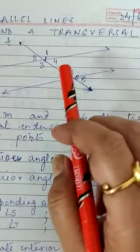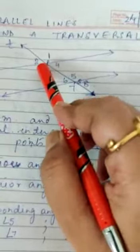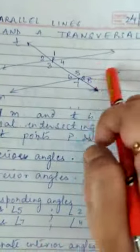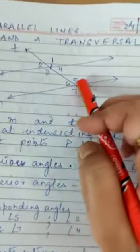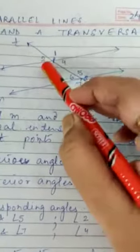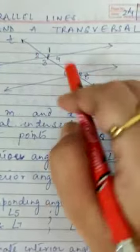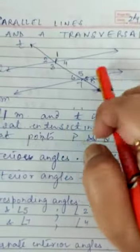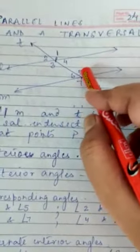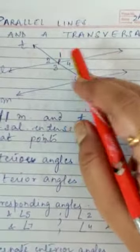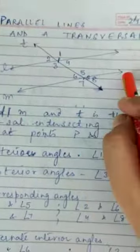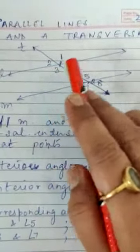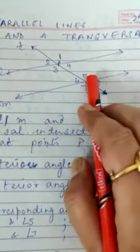Next theorem: if two lines are parallel, then alternate interior angles are equal — for example, angle 3 is equal to angle 5. The converse states: if alternate interior angles are equal, then the lines are parallel. So if lines are parallel, alternate interior angles are equal; and if alternate interior angles are equal, the lines are parallel.